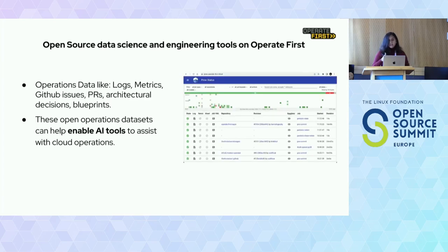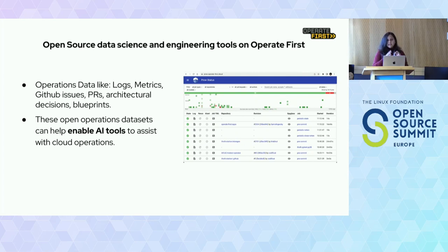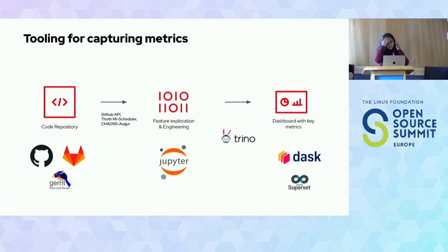The other side of the same thing is the open operations data being generated by operating the Open Data Hub project. Data like logs, metrics, PRs, issues, all the SRE best practices, architectural decision records, blueprints — all of that information can be used for any sort of analysis, and can also be used to enable any sort of AI tooling that we want to build on top of it. So now I'm going to talk about the tooling that we typically use for capturing these metrics.